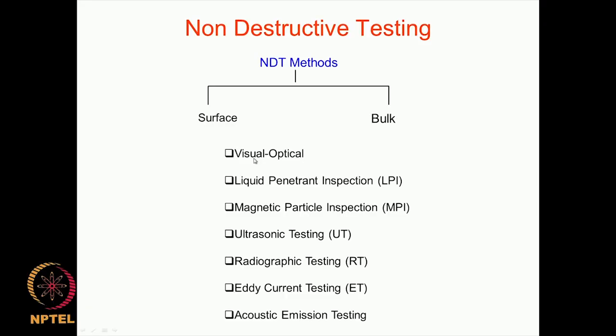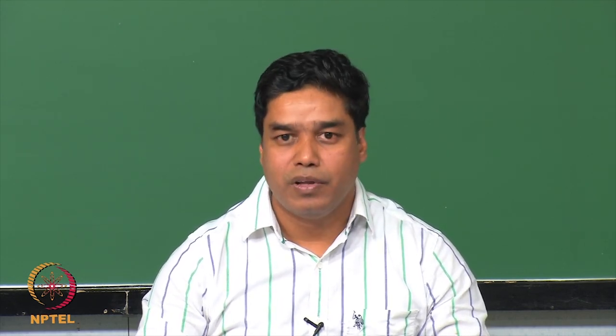There is something called visual optical at the top of the list. This is included because before you do any NDT — before you use any NDT technique to detect flaws — the first thing you do is try and see visually on the external surface of a component or part if something is visible to the naked eye. Sometimes you may also want to take the help of some kind of visual or optical aids, which will help you visualize externally on the surface if there is any damage or defect that you can easily detect and see.